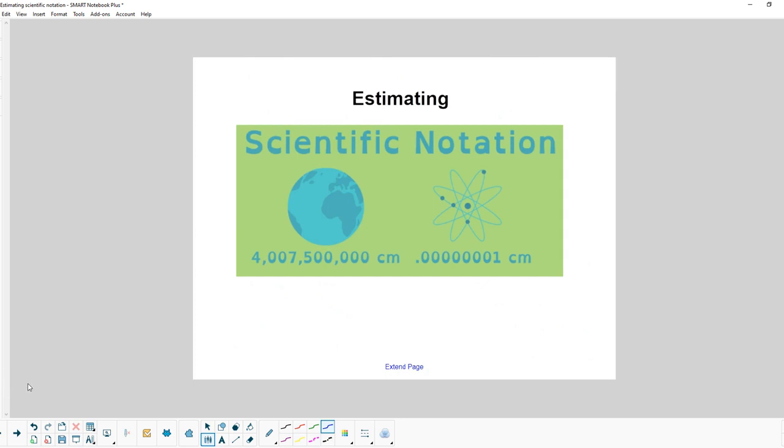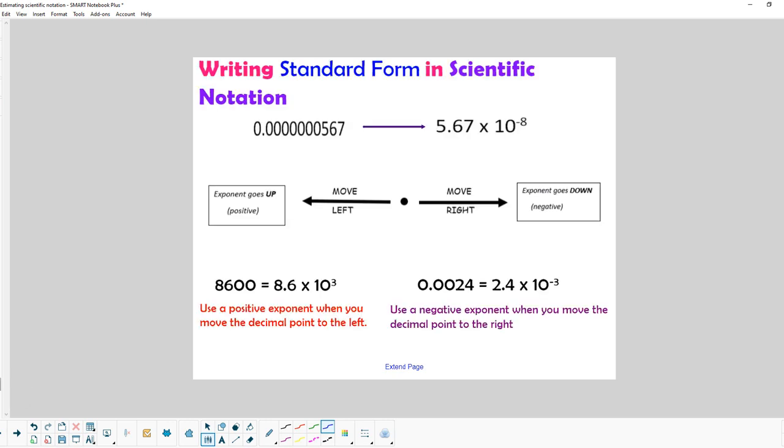So we're still talking about scientific notation, and now we're going to talk about estimating. Sometimes scientific notations have more decimal places than we would like, and we don't need something quite that accurate or precise. When we move that decimal over until we get it behind the first non-zero digit, that's how we put it into scientific notation form. We use a positive exponent when you move the decimal to the left and a negative exponent when you move it to the right.